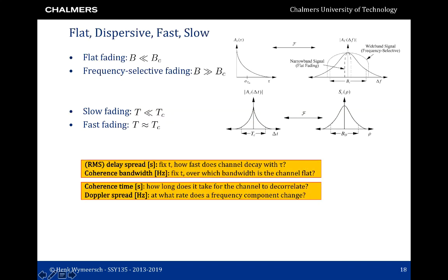Similarly for slow and fast fading: the autocorrelation function A_C(ΔT) — the same as in narrowband fading — goes approximately to zero at the coherence time T_C. The channel is approximately constant for a small fraction of T_C, say 10%. Taking the Fourier transform gives the Doppler power spectrum, from whose zero crossings we read the Doppler spread; the inverse of the Doppler spread approximates the coherence time. We have slow fading when the symbol slot is much less than the coherence time — many symbols see the same channel. We have fast fading when the symbol slot is on the order of the coherence time — approximately each symbol sees a different channel.